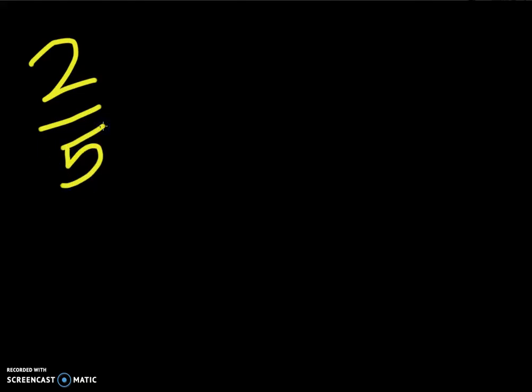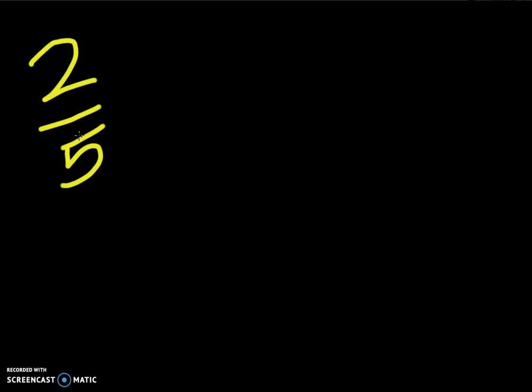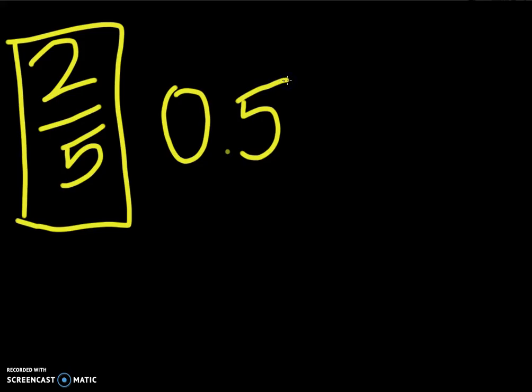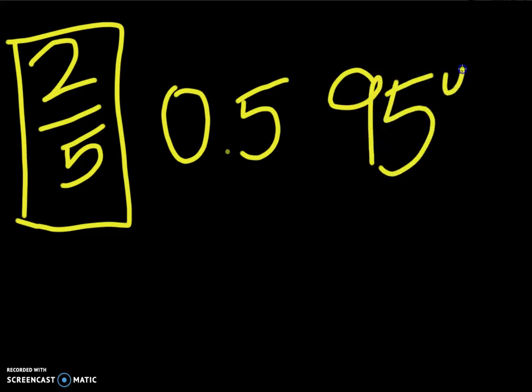Firstly, what does it mean to be a fraction, a decimal, a percentage, and how does each one look like? A fraction, to put it in a very non-mathematical term, looks like a number over something else. The top number is our numerator and the bottom number is our denominator — two important terms. Then we have a decimal, which is something like 0.5, and a percentage, something like 90% or 95%.